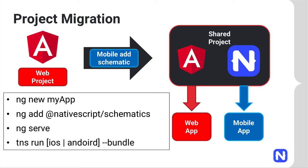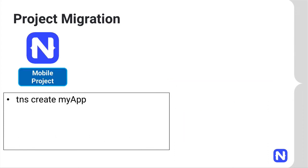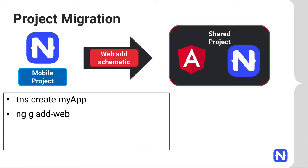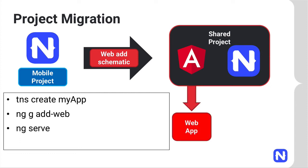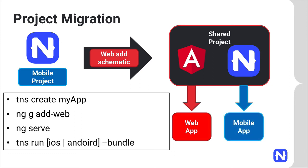You can also start from an existing NativeScript application and call something like ng add web. This schematic is still in progress and not yet complete, but it will be soon. The idea remains the same — after running it, you should be able to run ng serve or TNS run iOS or Android --bundle and get either a web or mobile application out of it.